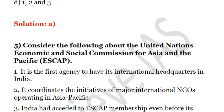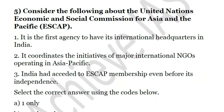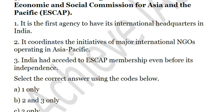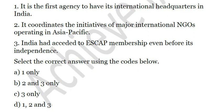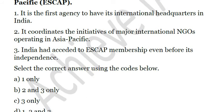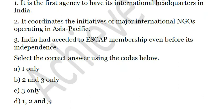The next question is: Consider the following about the United Nations Economic and Social Commission for Asia Pacific (UNESCAP). First, it is the first agency to have its international headquarters in India. Second, it coordinates the initiatives of major international NGOs operating in Asia Pacific. Third, India had acceded to ESCAP membership even before its independence. The correct statement is only the third, because UNESCAP is not headquartered in India — it is headquartered in Bangkok, Thailand. So the answer is C.